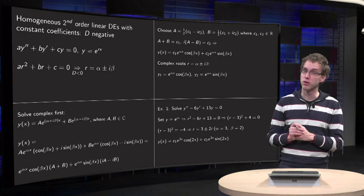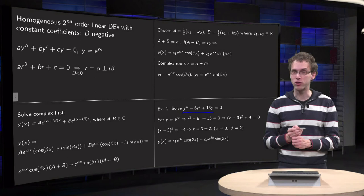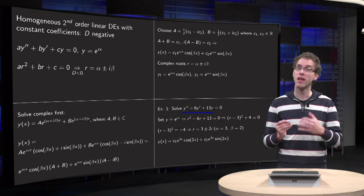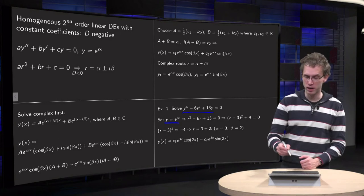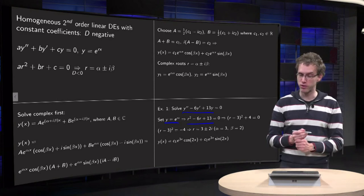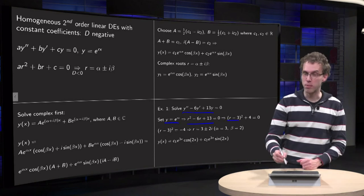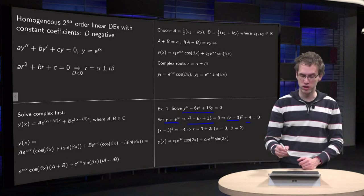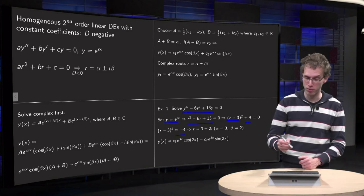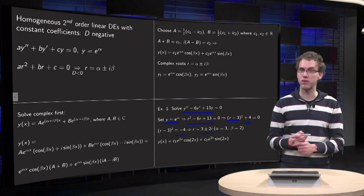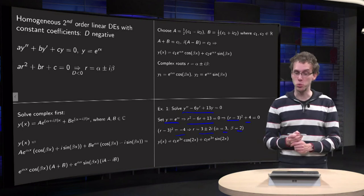So here's a small example. y'' - 6y' + 13y = 0. You find the characteristic equation by plugging in y = e^(rx). So r² - 6r + 13 = 0. Complete the square. Then you get (r - 3)² + 4 = 0. Bring the 4 to the other side: (r - 3)² = -4. So r = 3 ± 2i. So we find α = 3 and β = 2 in this case.